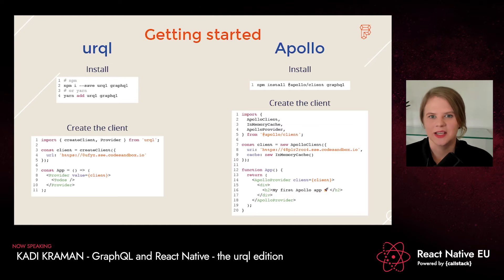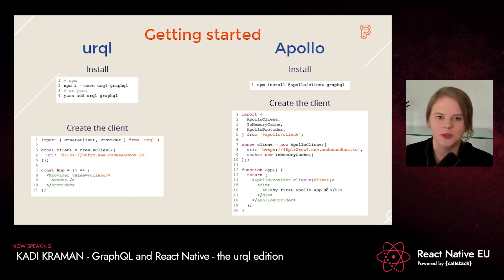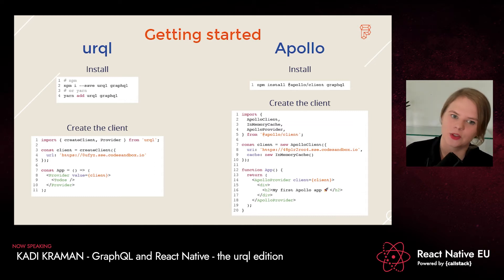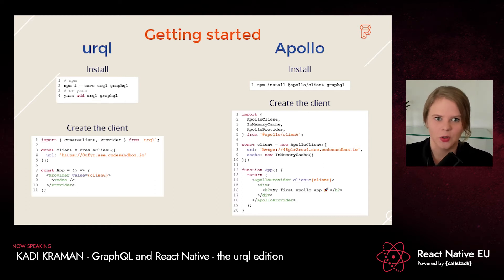Now let's get stuck in and look at some code. To get started with Urql, we start by adding the library — we add Urql and GraphQL. Then we create a client using the createClient function exported from Urql. The only mandatory config option is the URL for your GraphQL endpoint. Then we use the Provider also exported from Urql and wrap our application in it, passing the client in. This gives everything inside the Provider access to the Urql client.